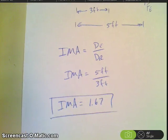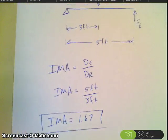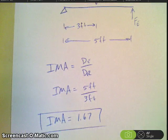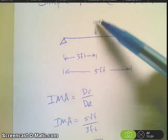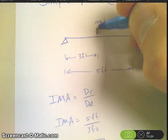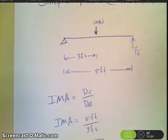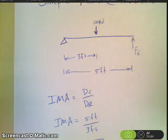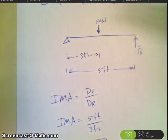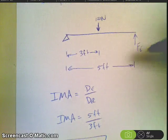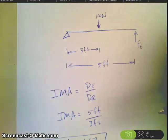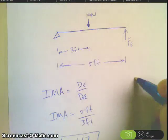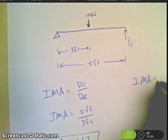And then let's say for example that it says determine the ideal effort force required to lift the 100 newtons weight. Again listen to it. Determine the ideal effort force required to lift this. Well if we want to know the ideal effort force we're assuming that there is no friction in this system. So therefore the IMA equals the AMA.